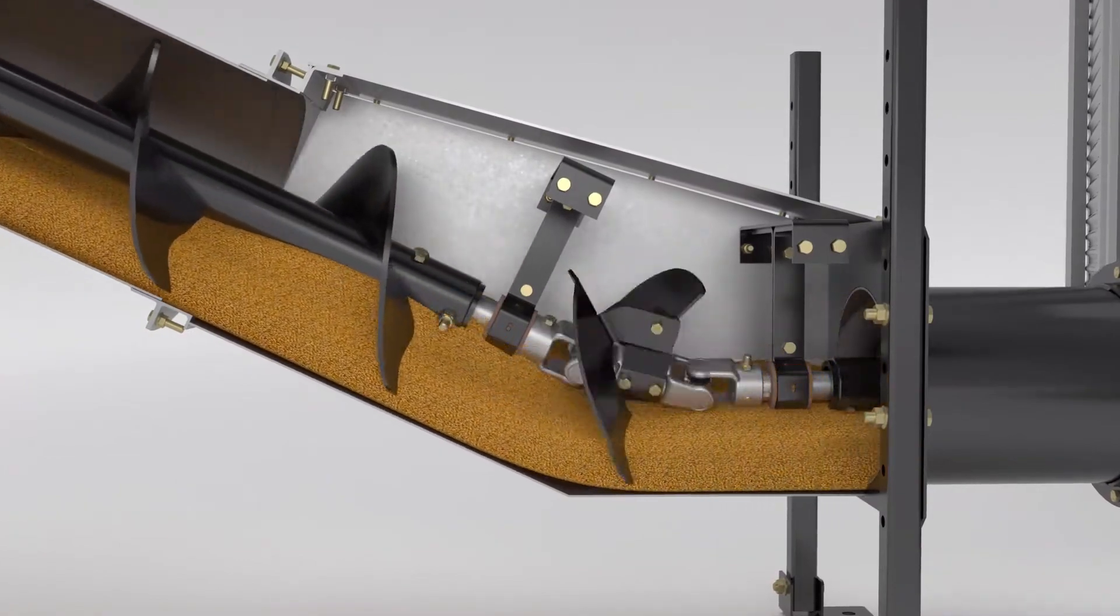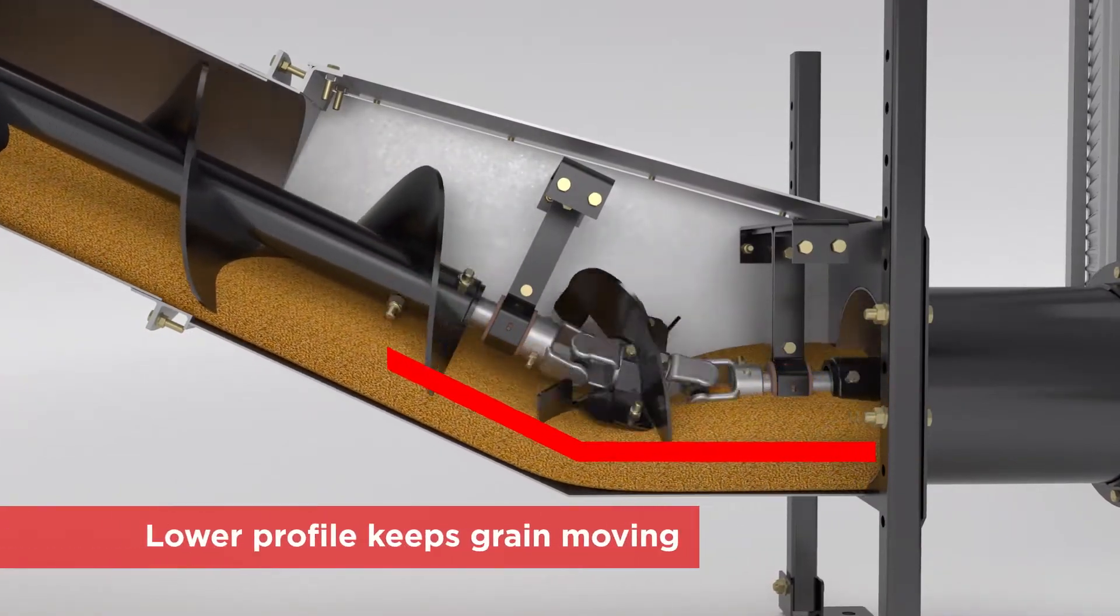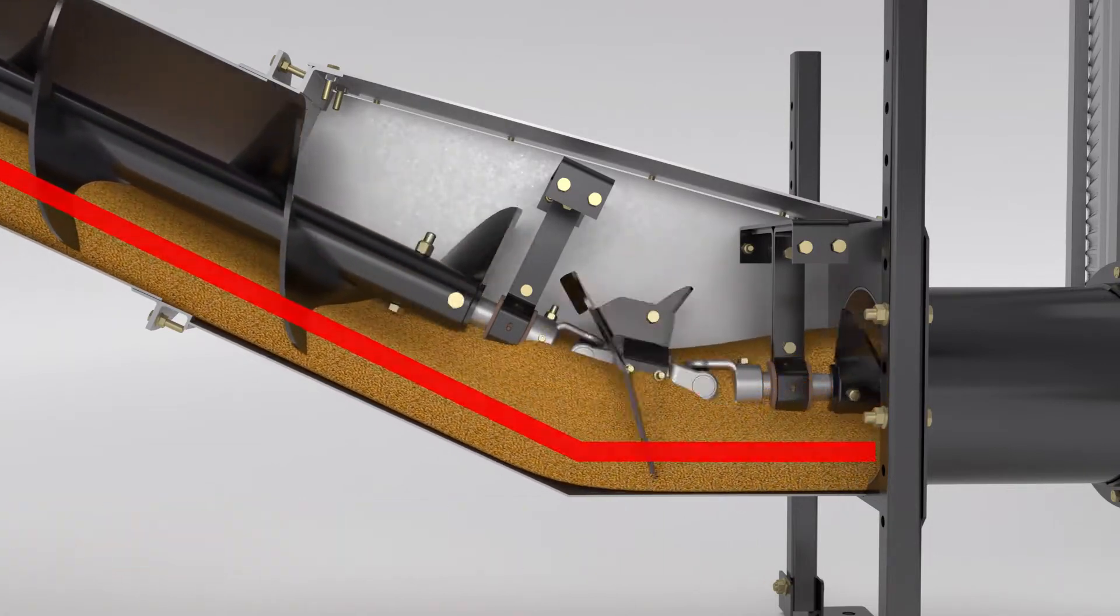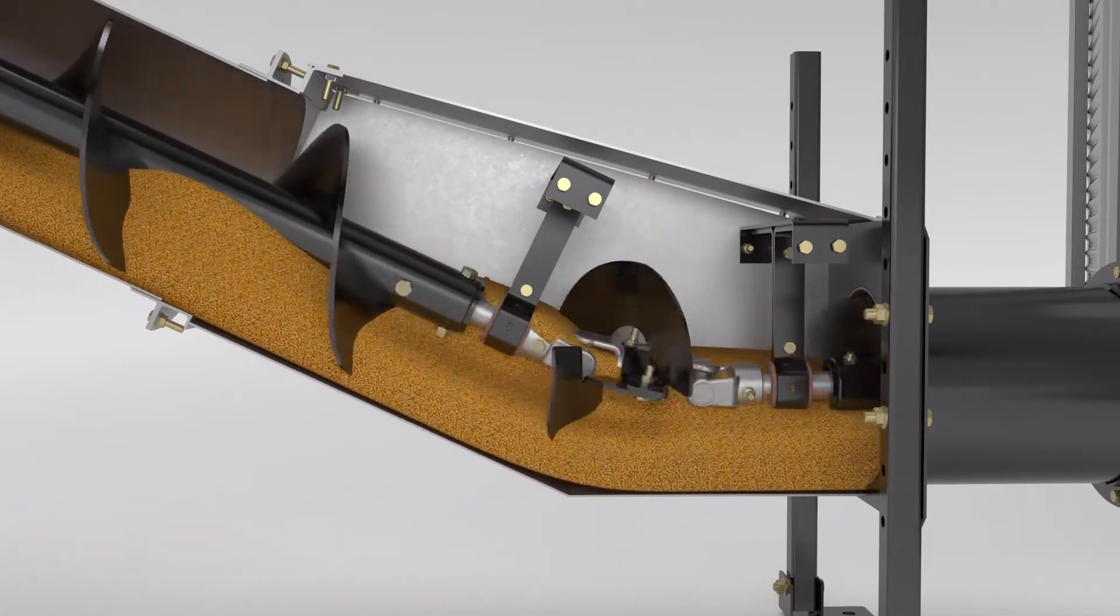Its contoured lower profile helps keep grain moving from the horizontal to the incline auger with less stress on the drivetrain and gentler handling of grain.